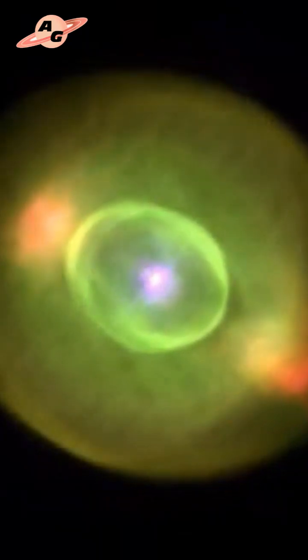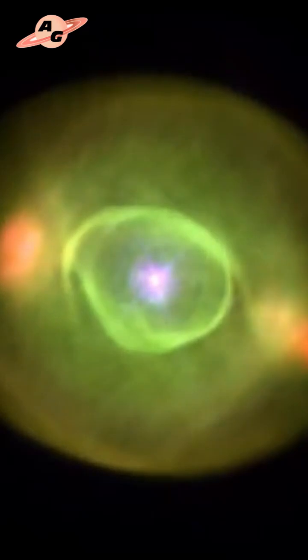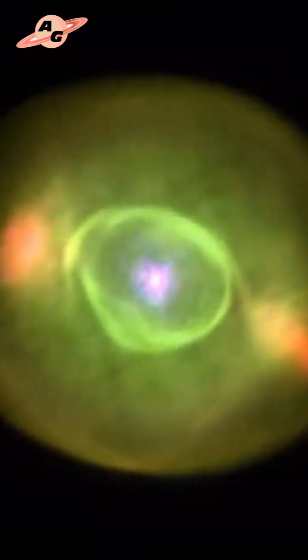Looking at the blinking planetary in the available images, we see that, in addition to the prevailing green color corresponding to doubly ionized oxygen, to the right and left of the center of the nebula we can see two bright red formations, which is typical for ionized nitrogen. These are the so-called fast low ionization emission regions, or FLIERs.